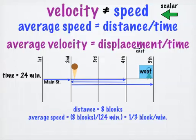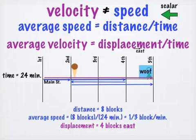My total displacement during the trip, however, is four blocks to the east. Displacement is a vector, which we will call delta d.